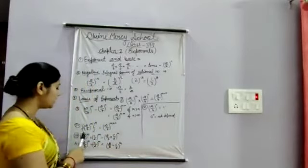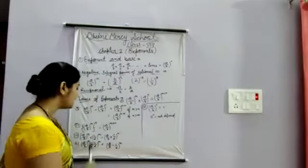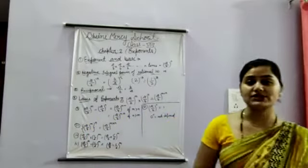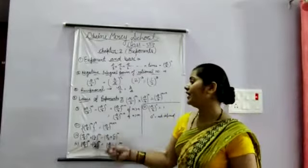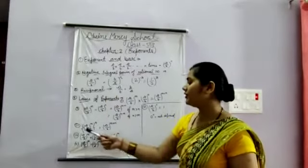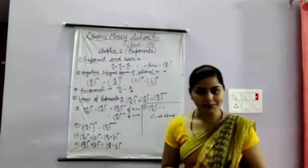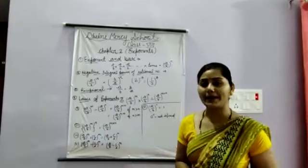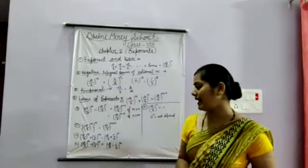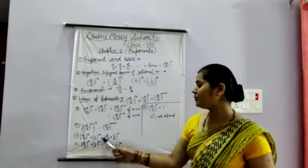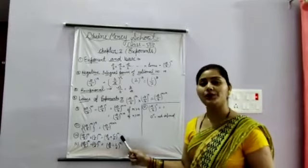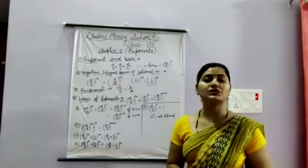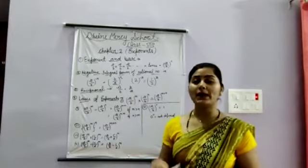The fourth law: if A upon B to the power M is multiplied by C upon D to the power M — the bases are different but the powers are the same — we multiply the bases and write the power once. The result is A upon B into C upon D, all to the power M.